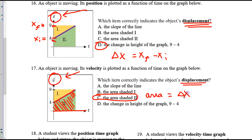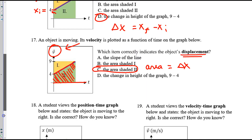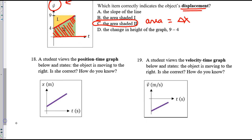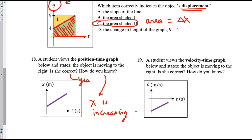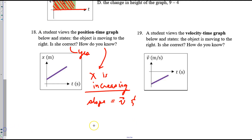That's a really good thing to have committed to memory. For 18, the object is moving to the right — yes, she is correct. How do we know? Because the position is increasing, or you could say the slope equals velocity, and the slope is positive because the line goes up.